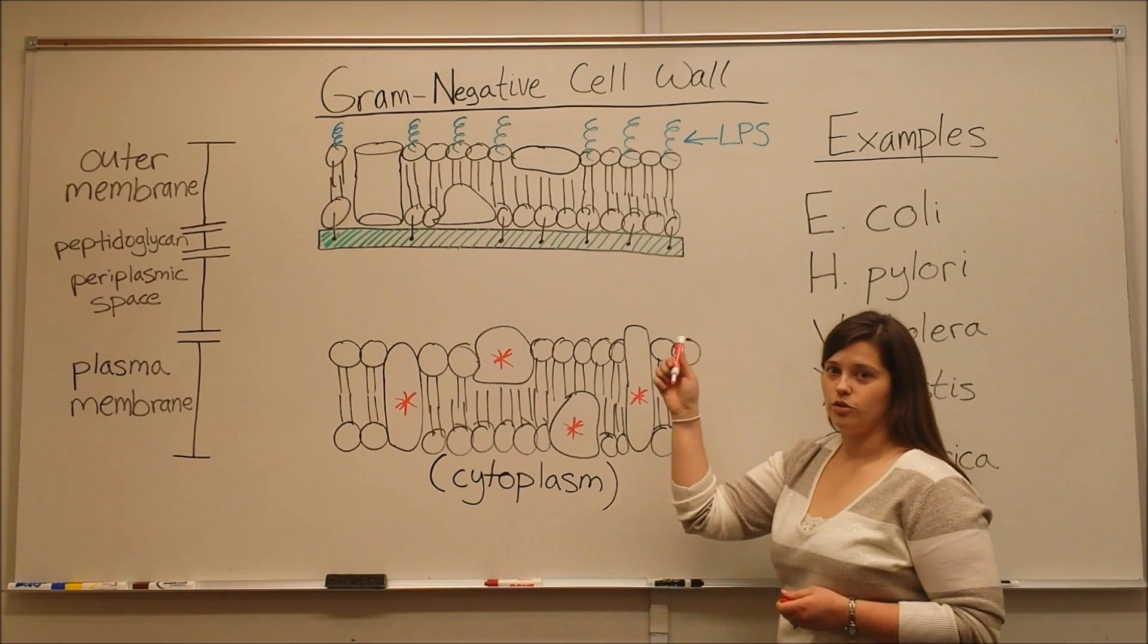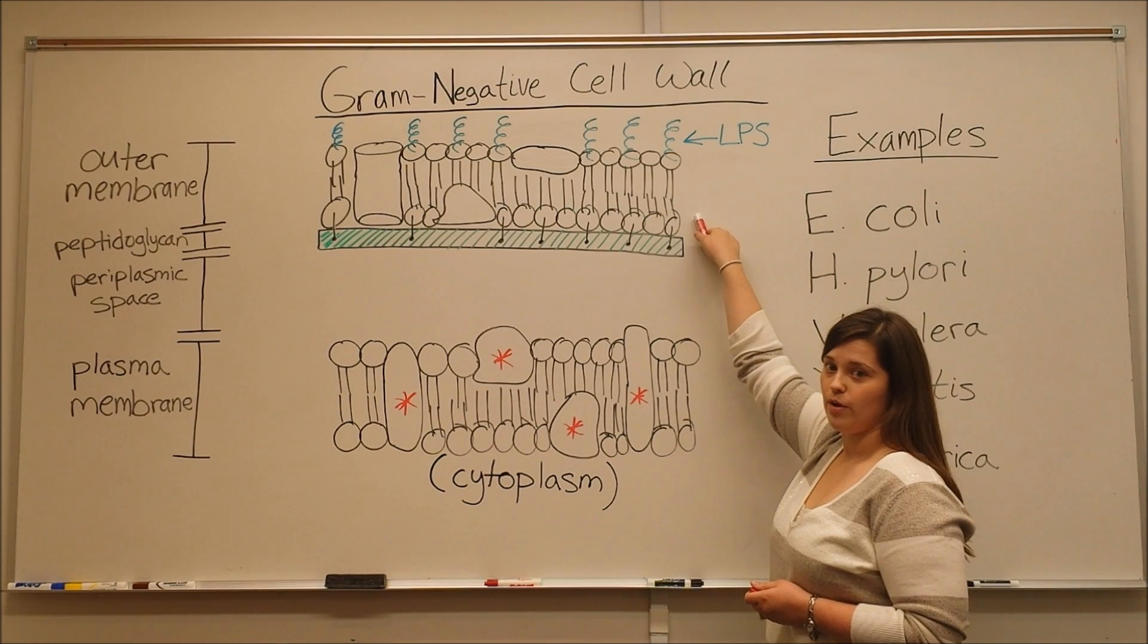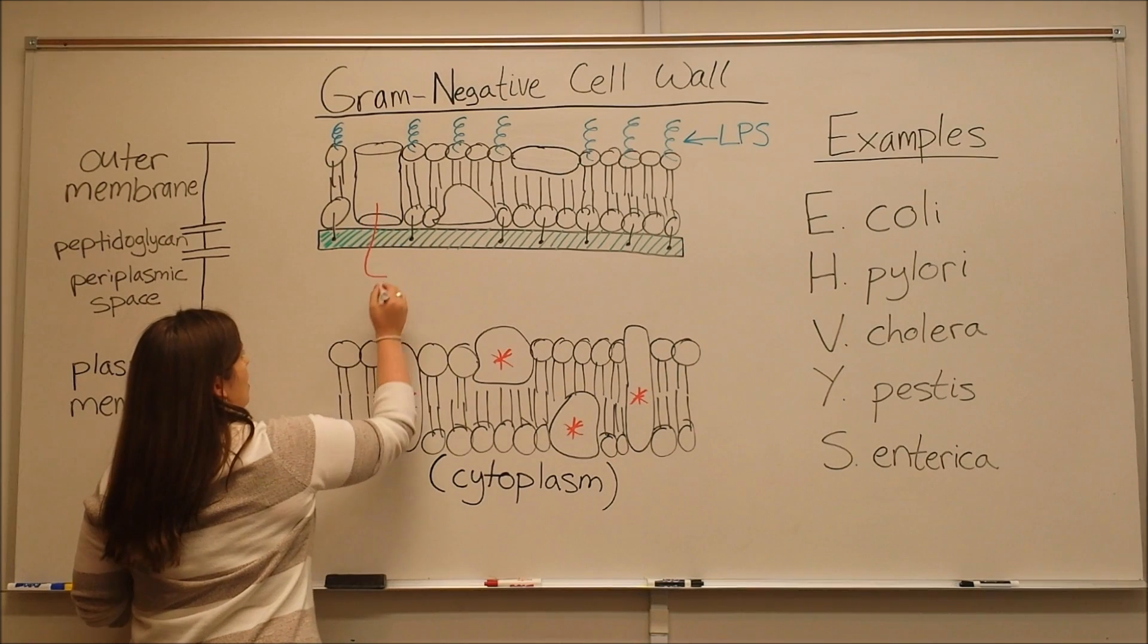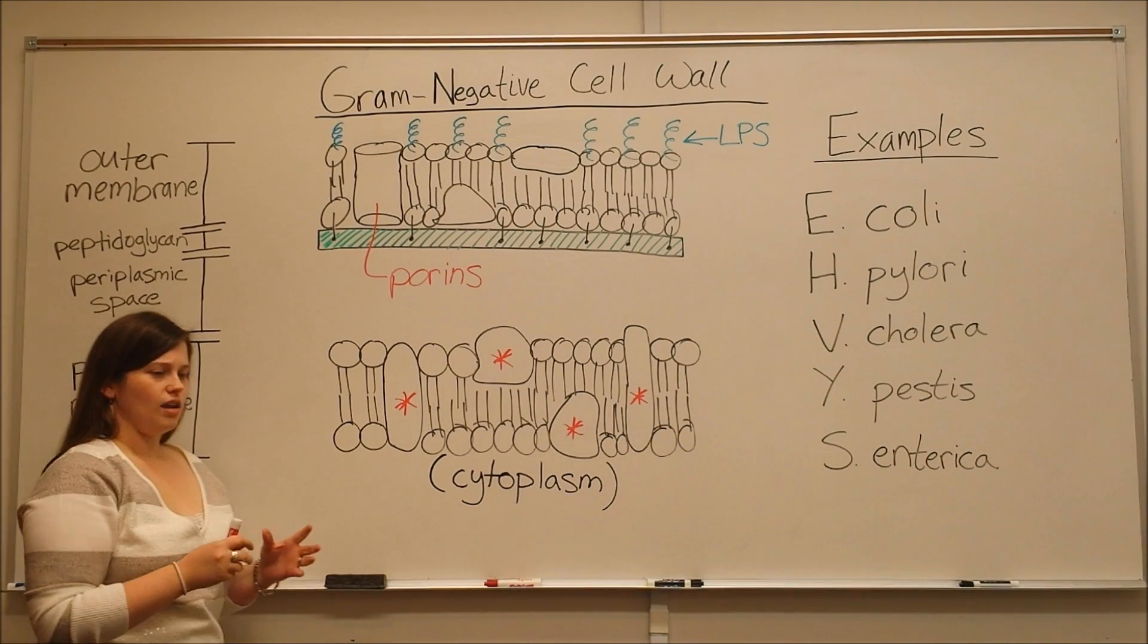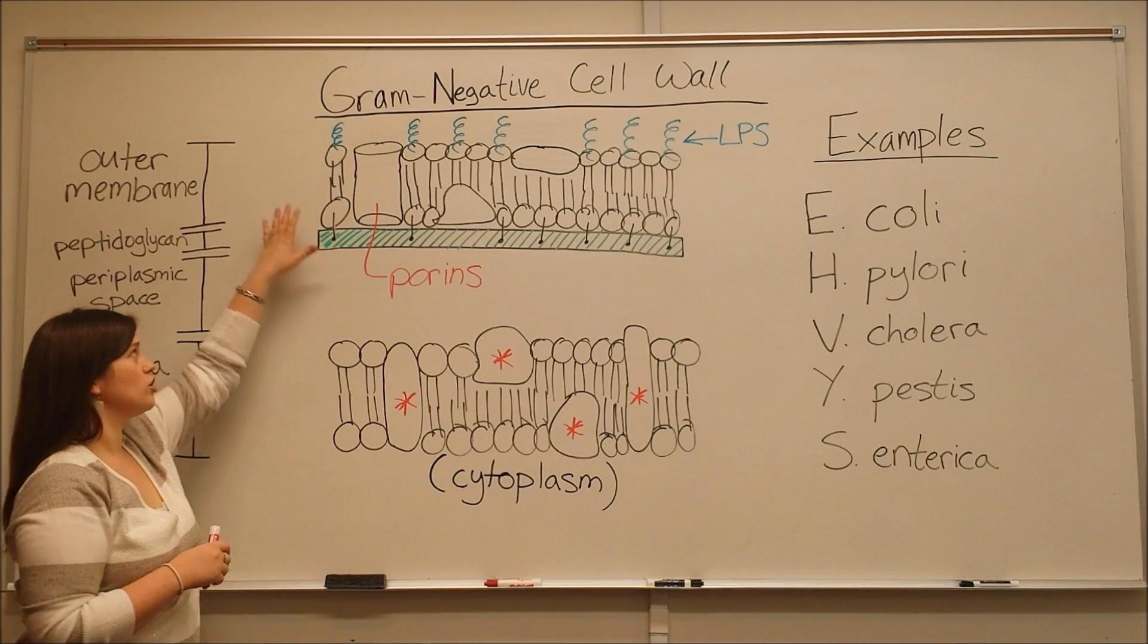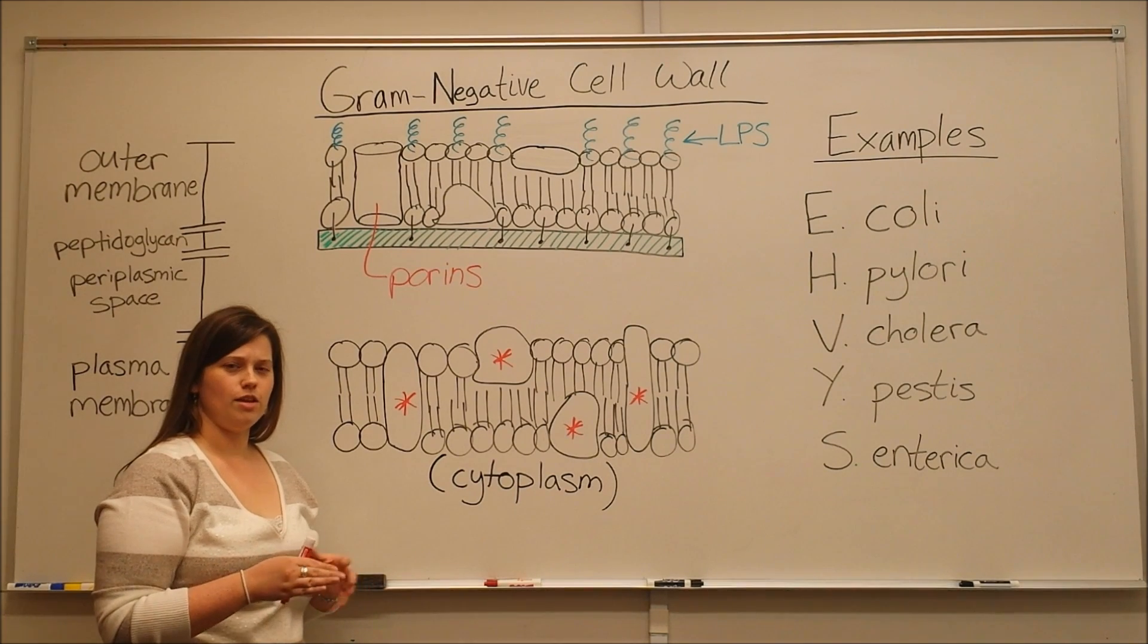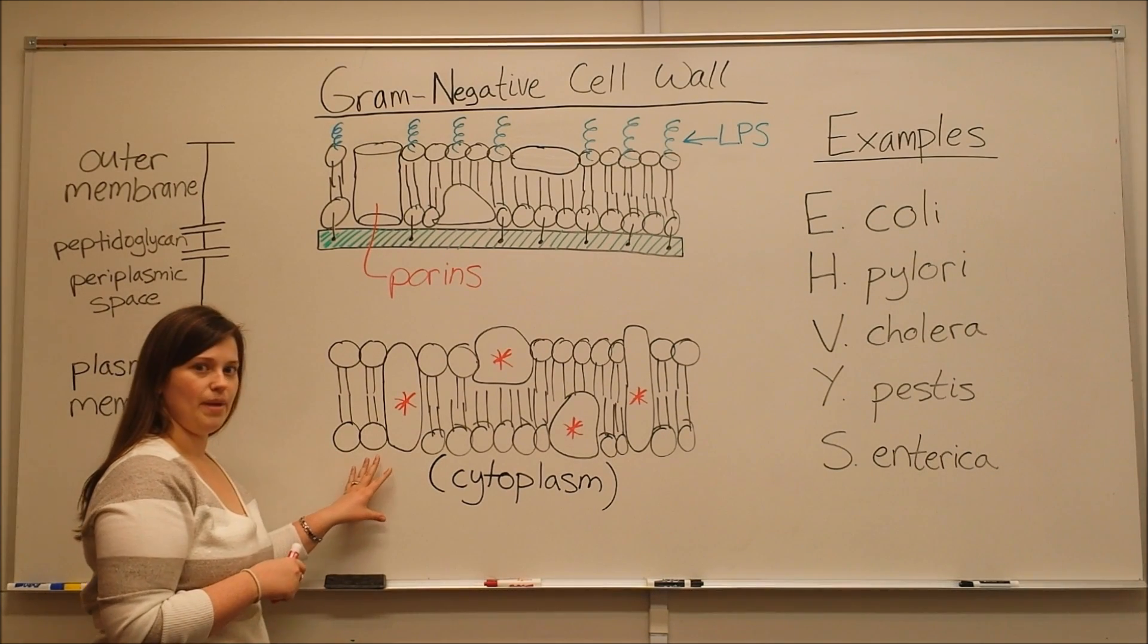And also unique to gram negative cell walls, this peptidoglycan layer is anchored to an outer membrane. So a second lipid bilayer with additional proteins. Now in the outer membrane, there are some proteins that are called porins. These porins allow for passive diffusion of things from the outside into the space between the two membranes, which is called the periplasmic space. These porins allow most things to diffuse through as long as they can fit. So there's something specific about that. The actual selective permeability of the cell is still controlled by this inner plasma membrane.